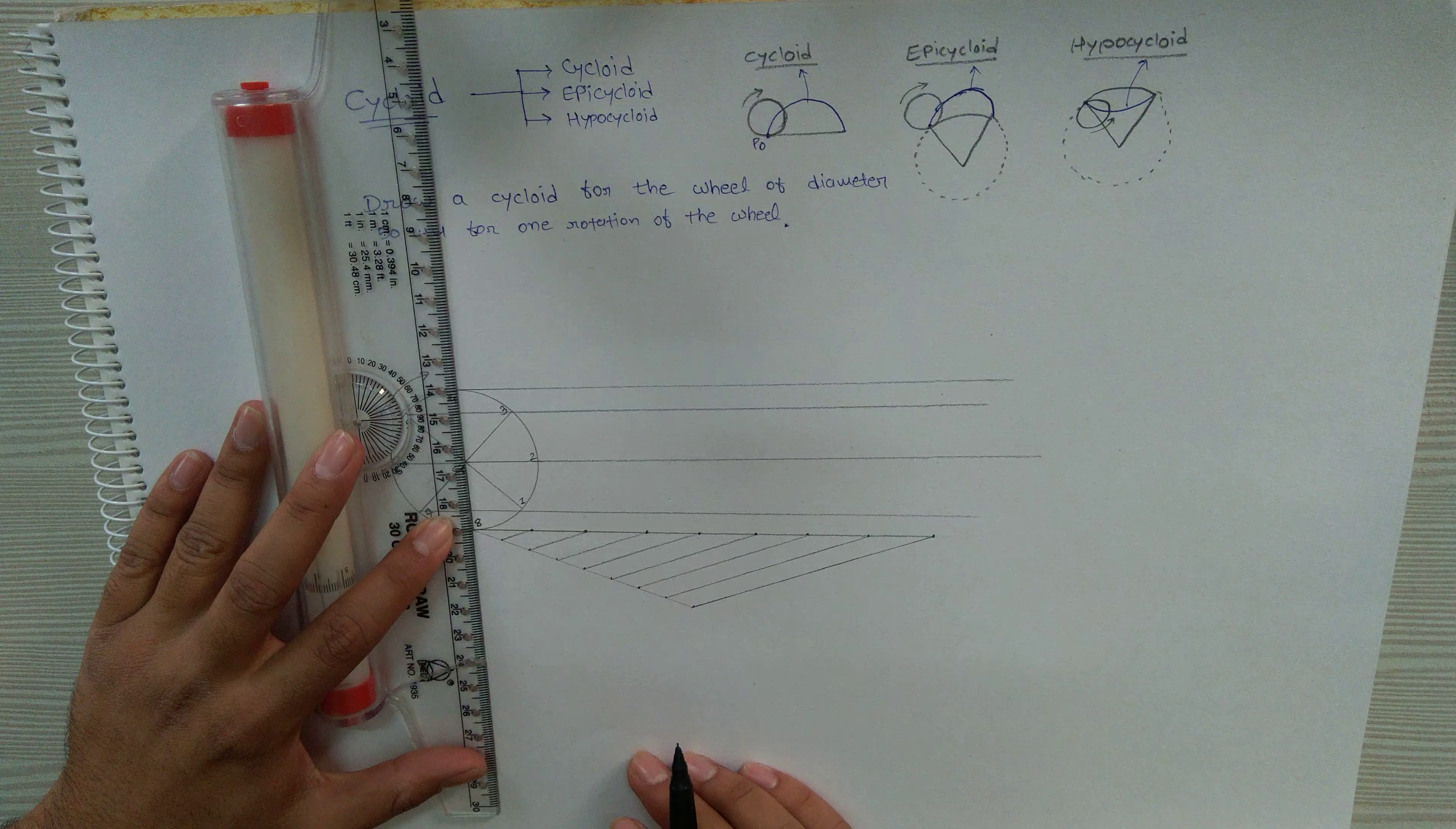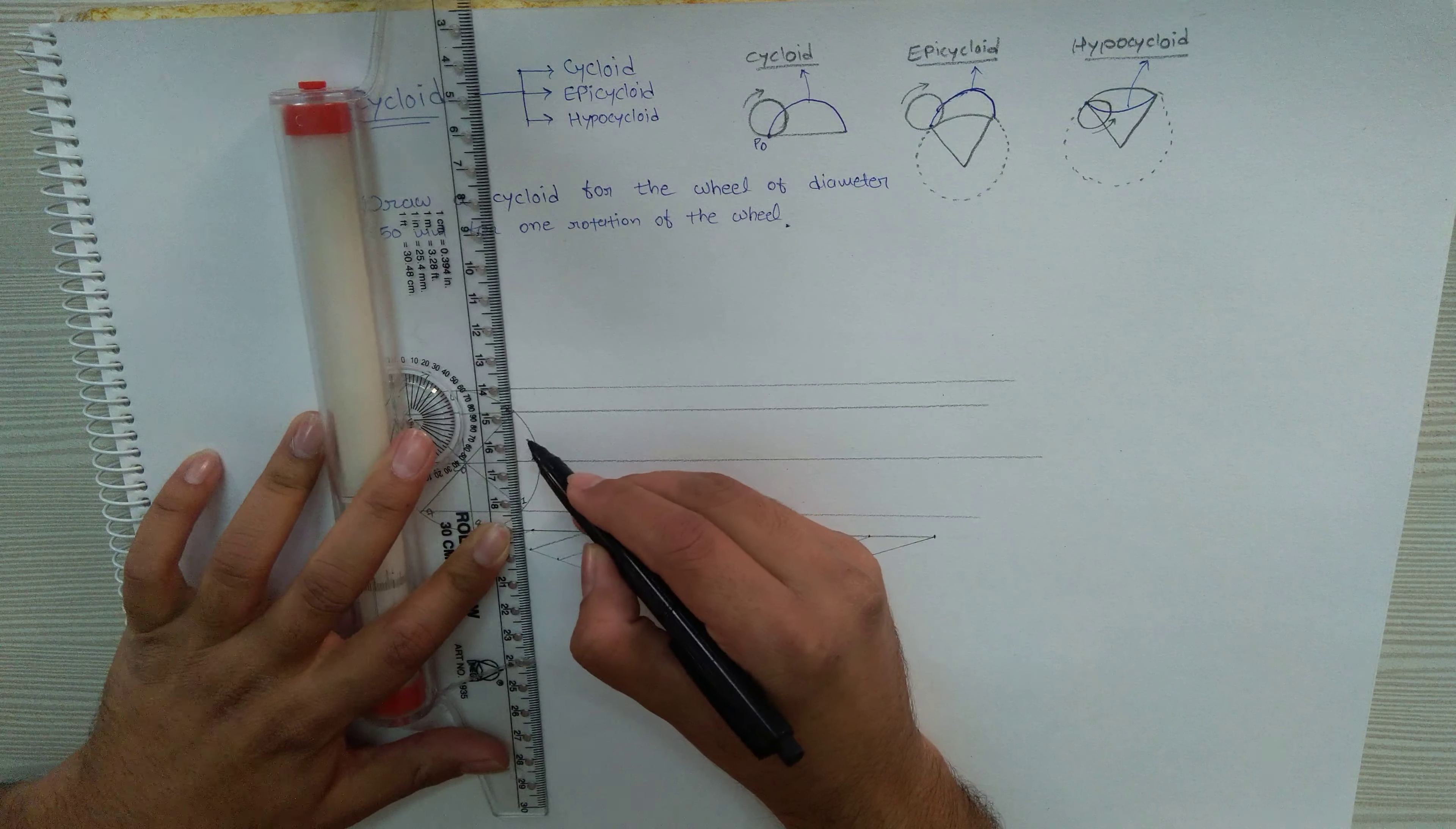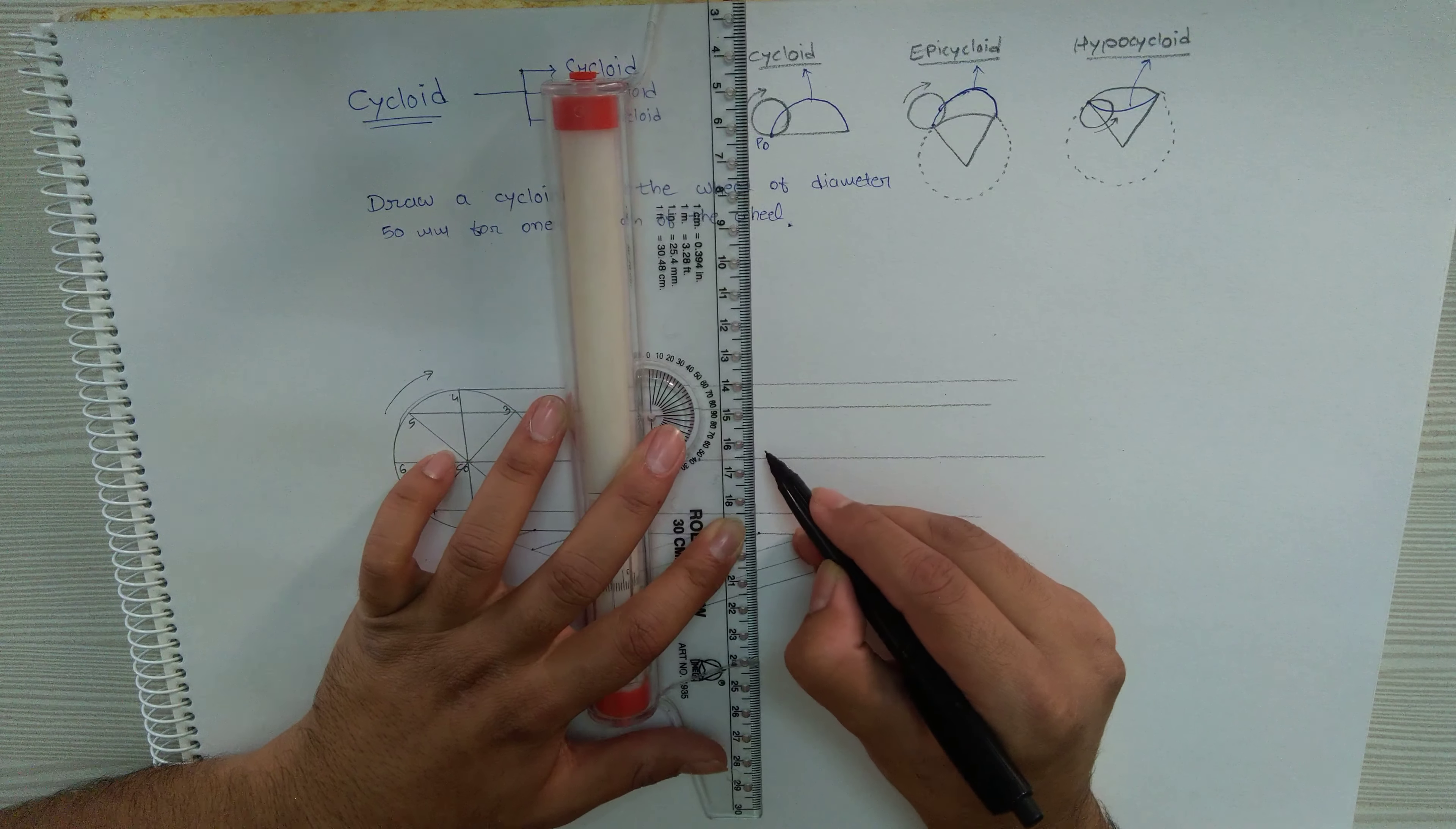Now our intention is to get the different positions of the wheel for one rotation. That is why we have divided this line into eight equal parts - ultimately we want these eight equal parts on the center line. So this is c1, c2, c3, c4.